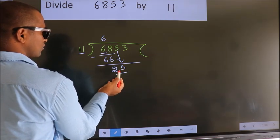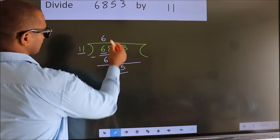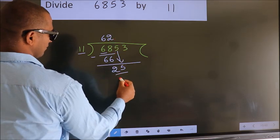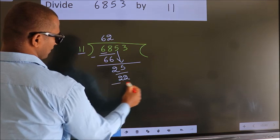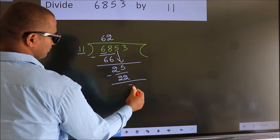A number close to 25 in the 11 table is 11×2, which is 22. Now we subtract. We get 3.